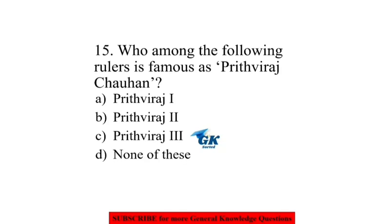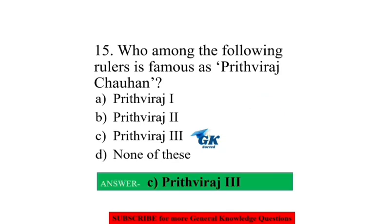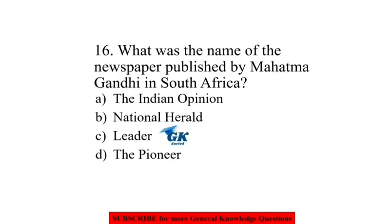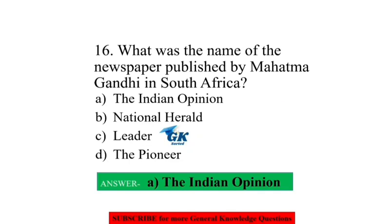Who among the following rulers is famous as Prithviraj Chauhan? Prithviraj III. What was the name of the newspaper published by Mahatma Gandhi in South Africa? The Indian Opinion.